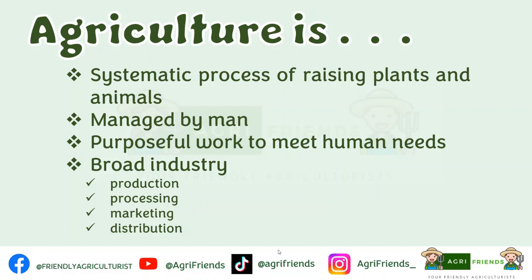It is work with a purpose to produce plants and animals to meet human needs. It is also a broad industry — it involves the production of plants and animals for food and fiber, the provision of agricultural supplies and services, and the processing, marketing, and distribution of agricultural products.